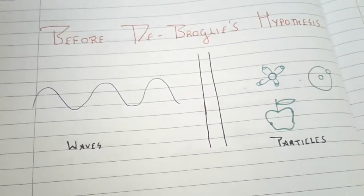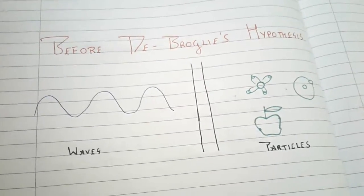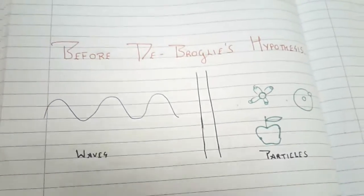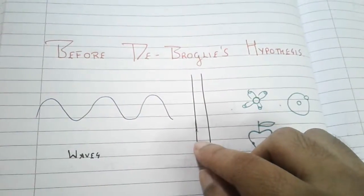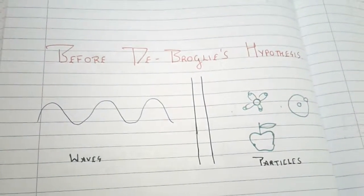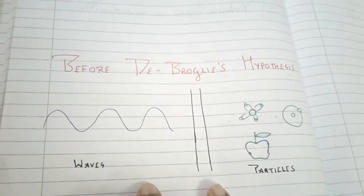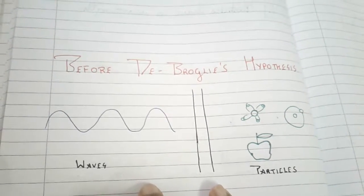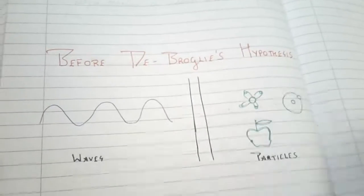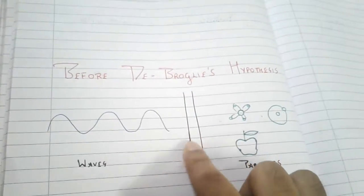Before de Broglie came in, physicists had partitioned waves and particles into two separate watertight compartments. But after de Broglie's hypothesis, this partition was about to break. Physicists at those times couldn't cope with this new change — how can particles and waves, which seem to have two separate sets of properties, converge at the level of small things like atoms or electrons? It was counter-intuitive for them. But then de Broglie came in and the separation between particles and waves got severed.